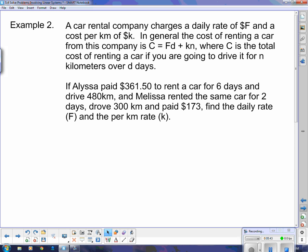Next question. A car rental company charges a daily rate of F dollars and a cost per kilometer of K dollars. In general, the cost of renting a car from this company is C equals FD plus KN, where C is the total cost of renting a car if you are going to drive it for N kilometers over D days. So this tells me, this general form says I've got cost equals F is the daily rate, D is the number of days you're driving, K is the per kilometer rate, and N is the number of kilometers you're driving.